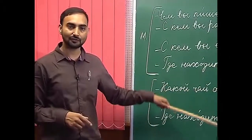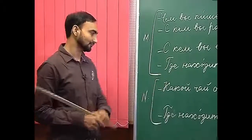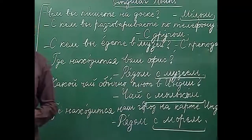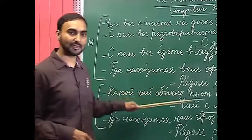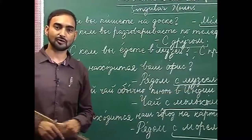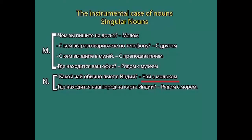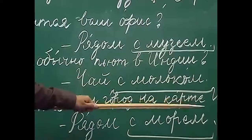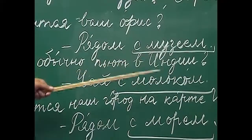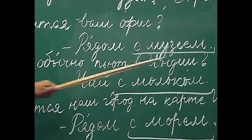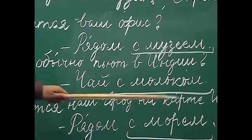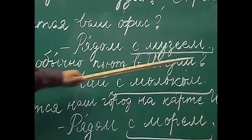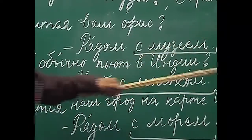We will follow the same pattern. 'Какой чай обычно пьют в Индии?' — which tea is usually preferred in India? The answer is 'чай с молоком' — tea with milk. Молоко ends with -о and it is a neuter gender noun. Whenever you come across a neuter gender noun with a hard ending — meaning ending with -о — we add -м. So молоко becomes молоком.